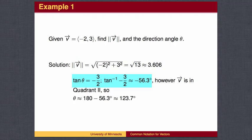Notice that the vector V points into the second quadrant, but the inverse tangent gives a fourth quadrant angle. We can find the corresponding angle in the correct quadrant by finding 180 minus 56.3.